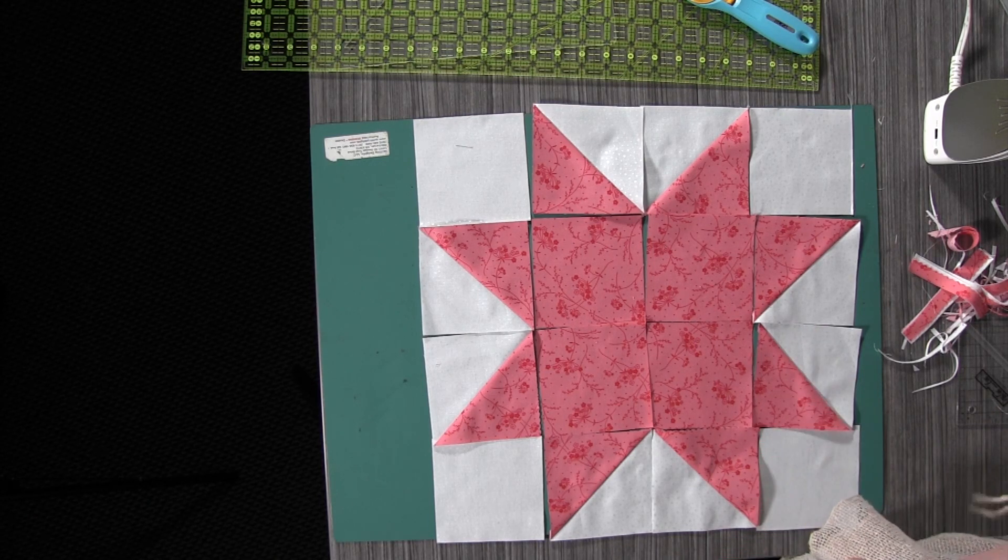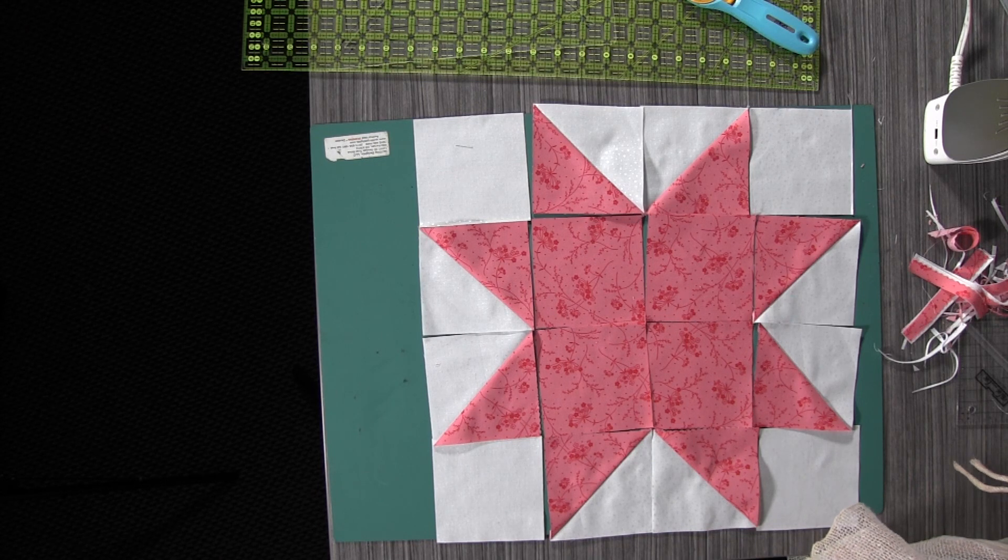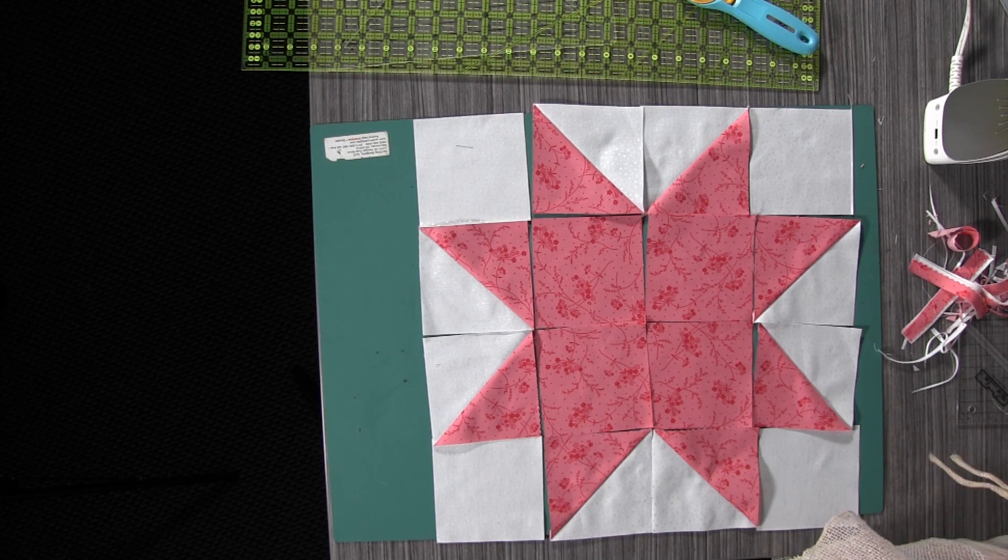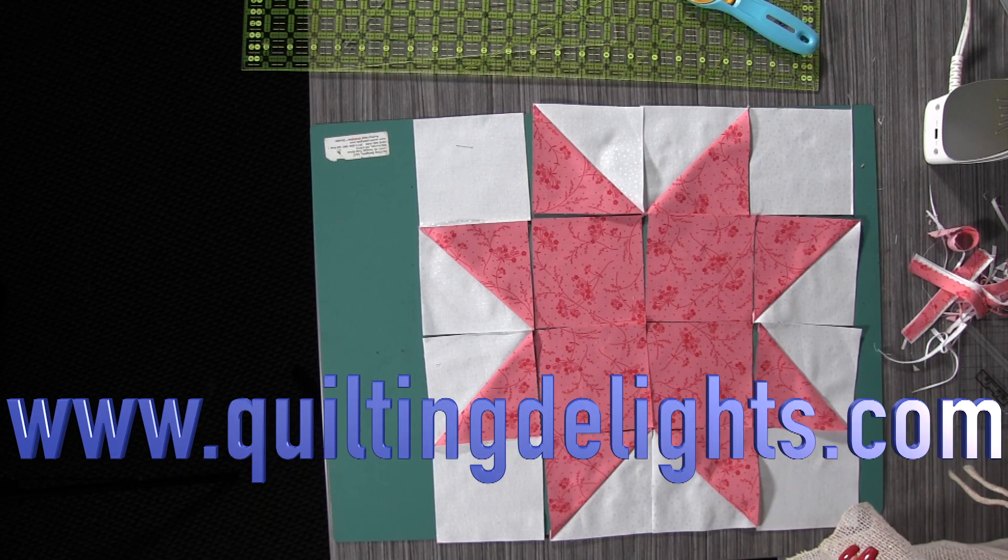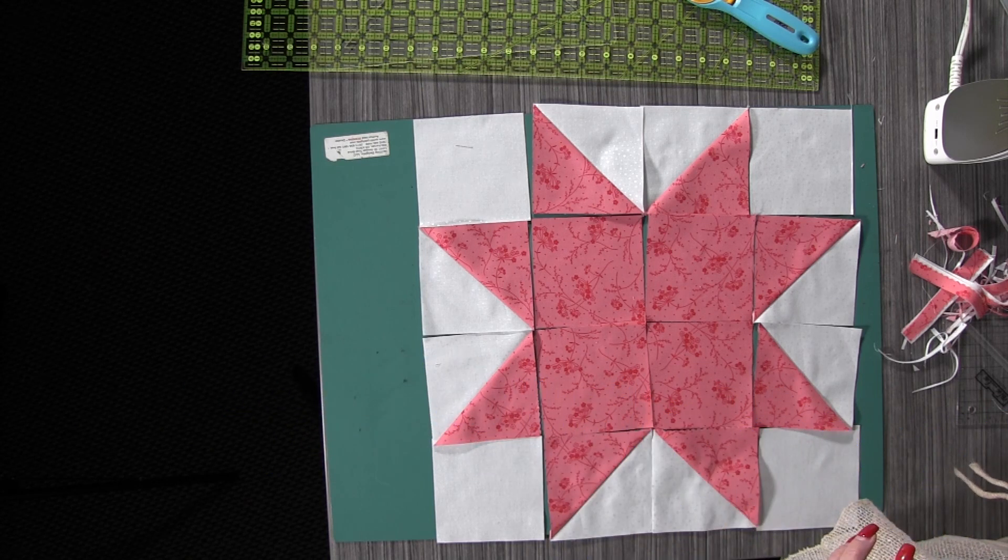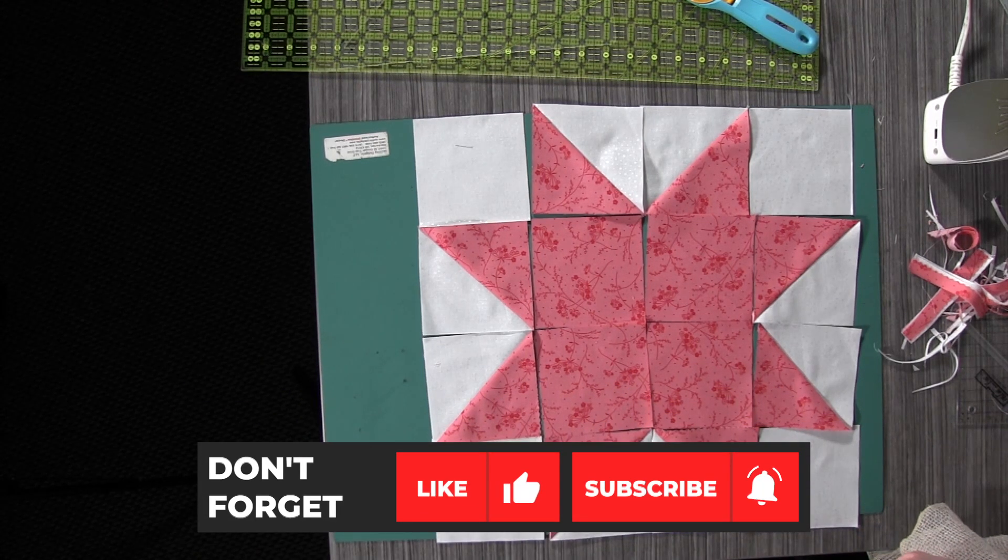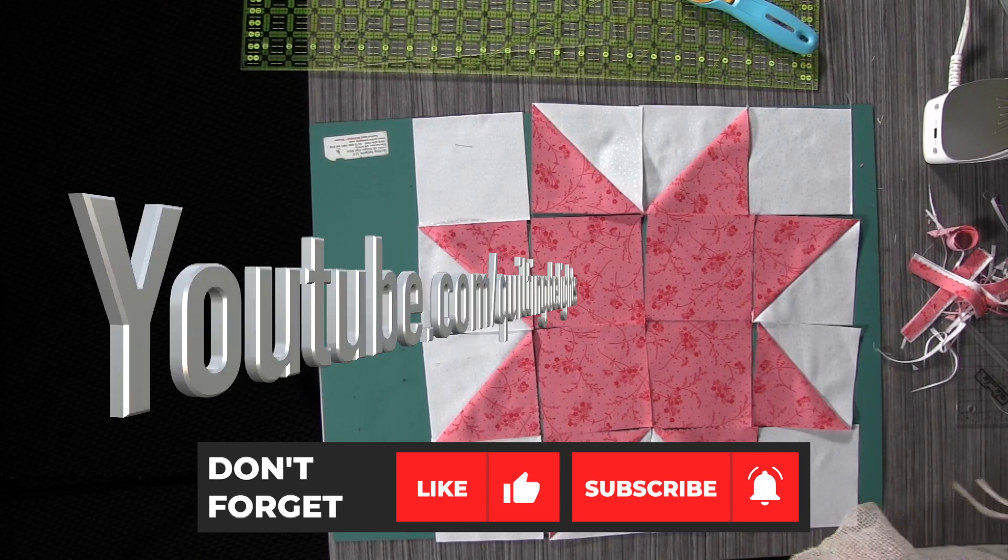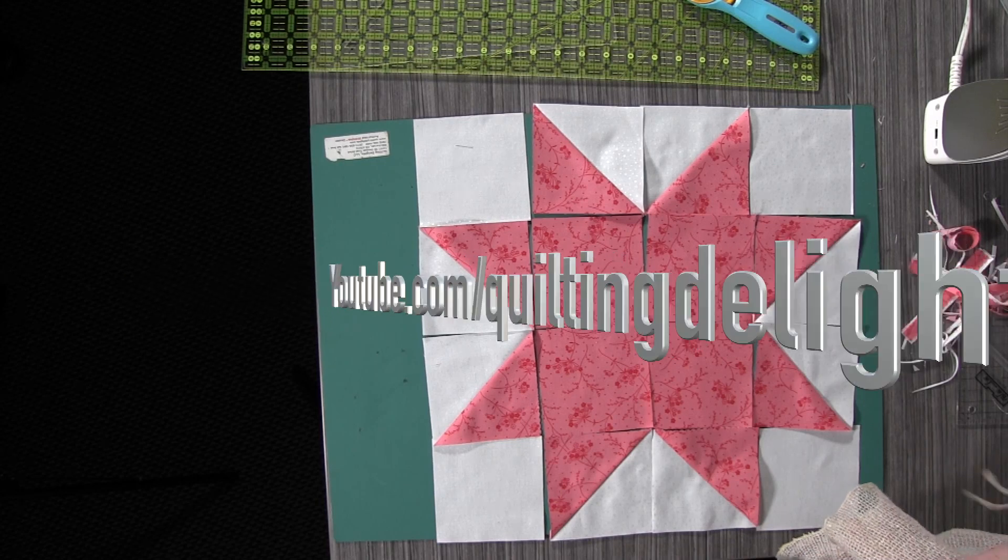Those are some helpful hints on the stars and flower quilt. We wish you the very best. Send us pictures. Send them to our website at www.quiltingdelights.com. You can post them on our Facebook page, Quilting Delights, and check in our YouTube channel and make sure that you ring the bell and sign up so that you get all of our notifications. That's youtube.com forward slash quilting delights. Thanks, and we'll see you soon.